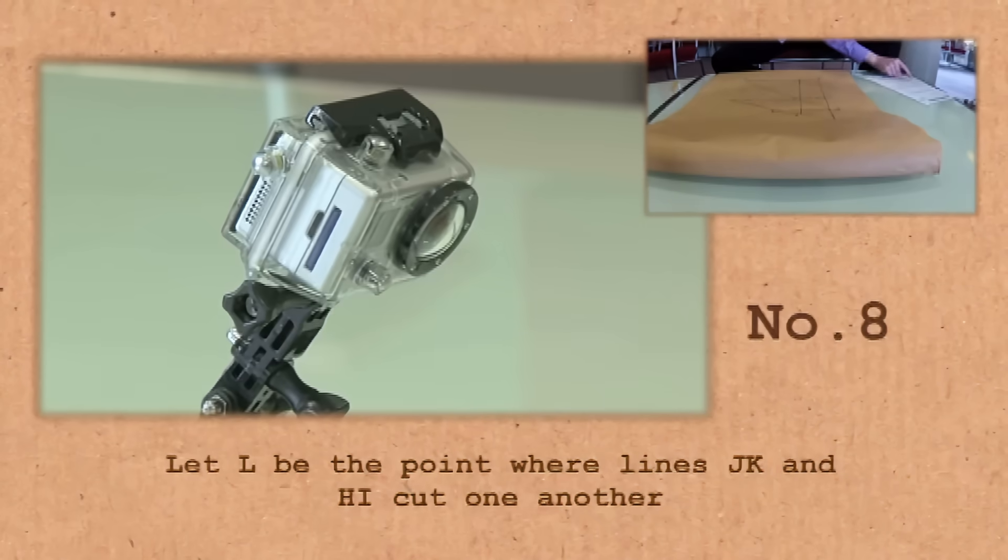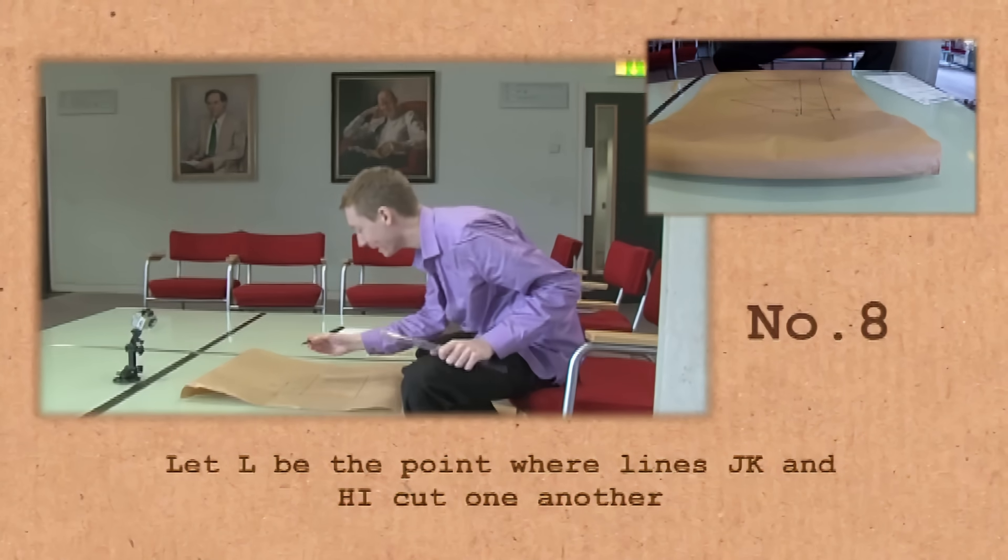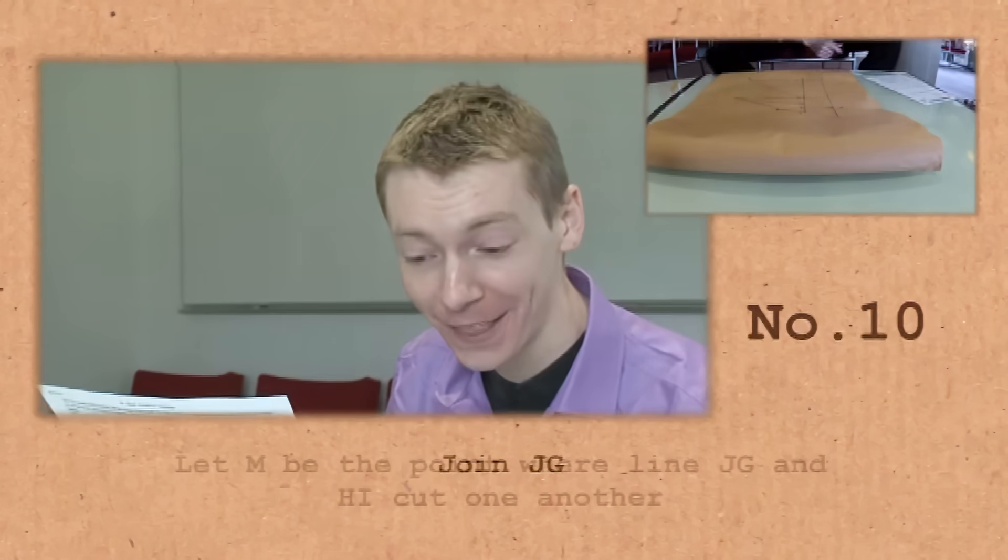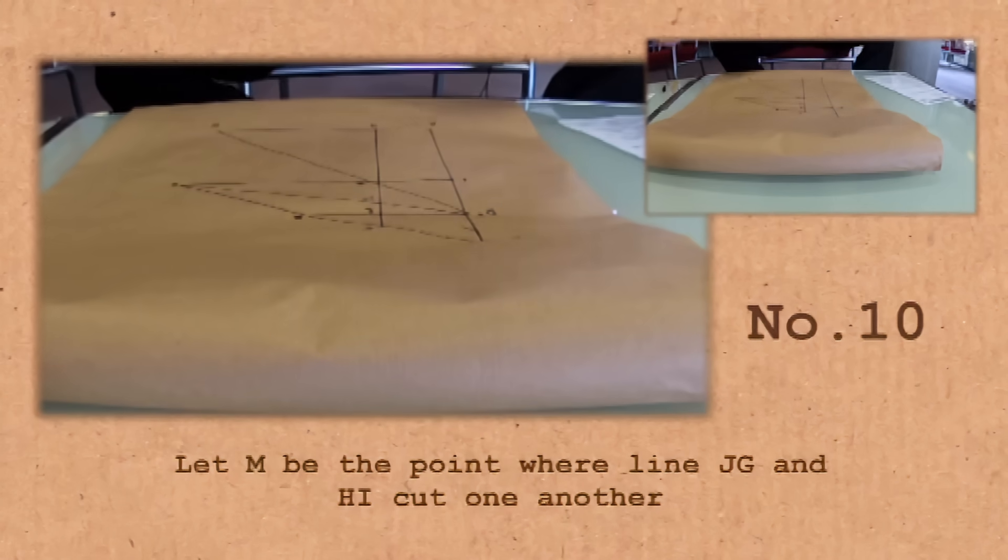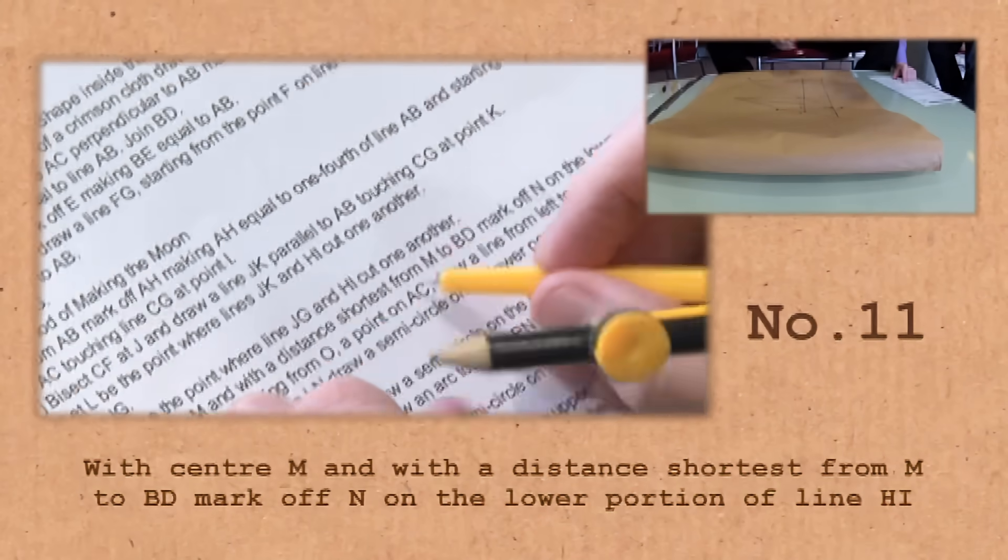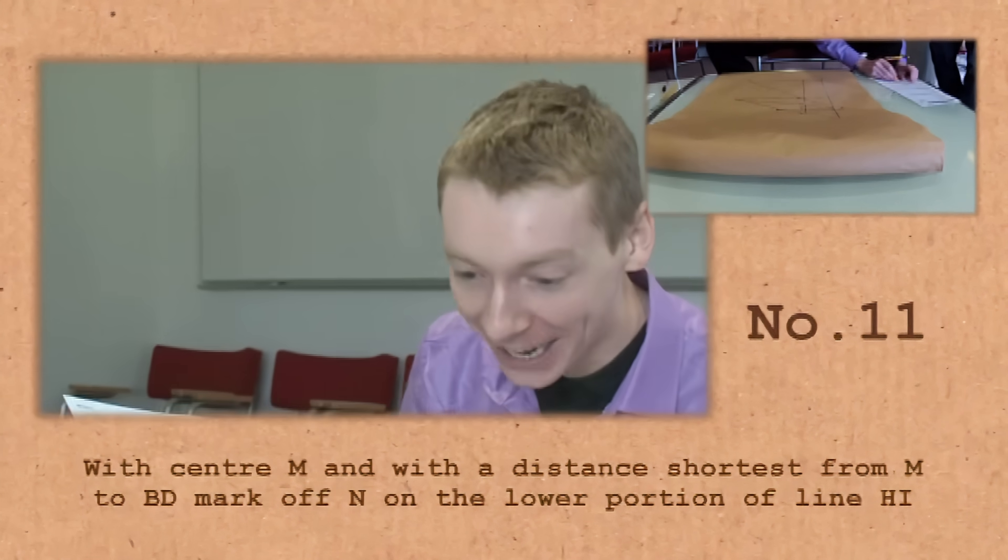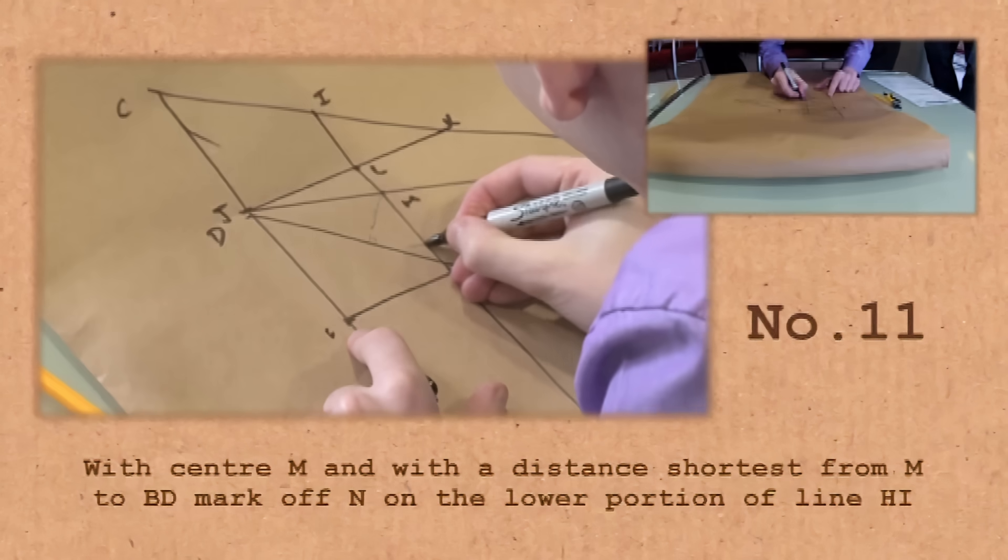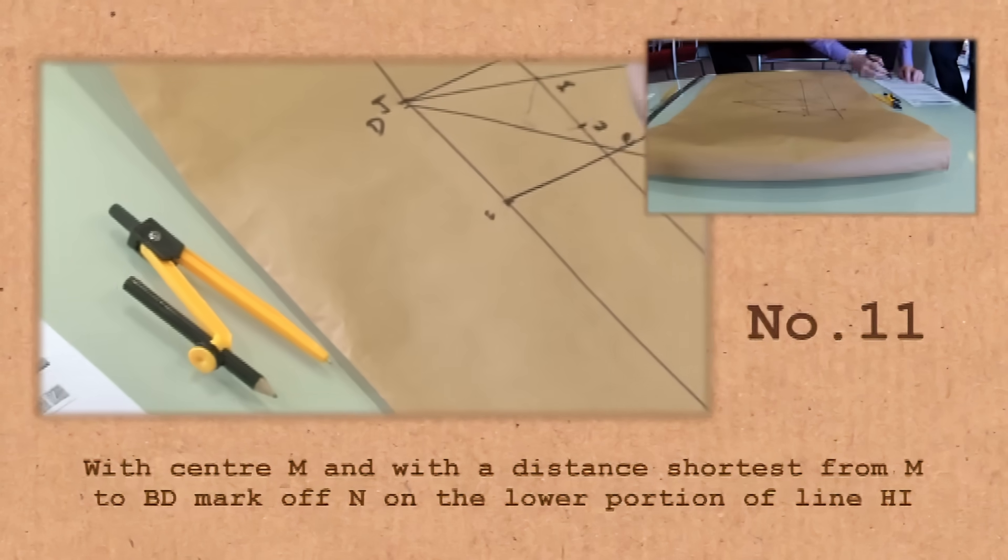It's telling you to divide things by half and quarters and thirds and using those rules. Without measuring, we should be able to do this. Let L be the point where lines JK and HI cut one another. 9. Join JG. 10. Let M be the point where line JG and HI cut one another. With centre M and with a distance shortest from M to BD, mark off N to the lower portion of line HI.